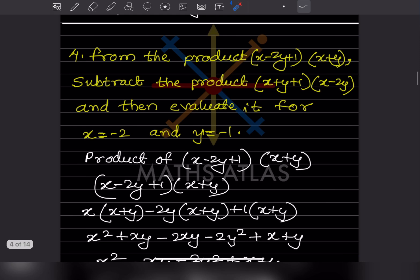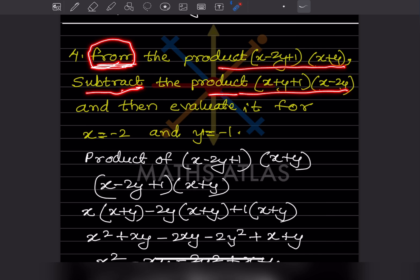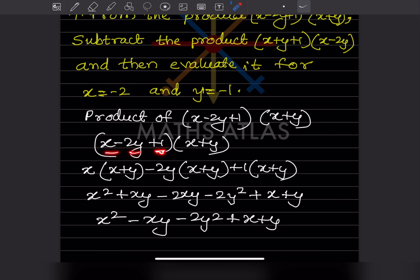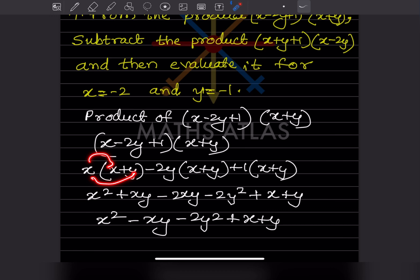Now look at this problem: from the product of this expression, subtract the product of this expression. First you take the product of the first — multiply it. These are three terms, so we take the first term and multiply with the whole bracket, then take the second term with its sign and multiply with the bracket again. Expand each result.